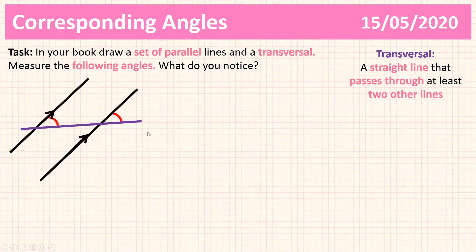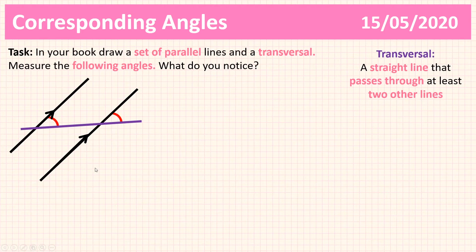So here's my diagram. You're going to measure one interior angle and one exterior angle, and make sure both of the angles are on the same side of the transversal. Here's my example: here are my parallel lines, the purple line is my transversal, the red angles are the ones I've measured, and I got 50 degrees for both of them.